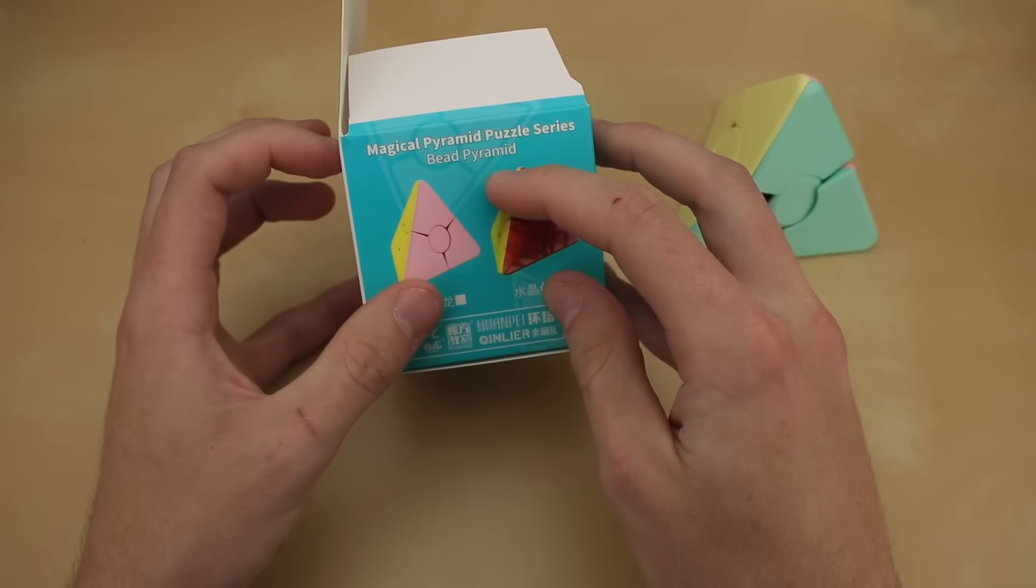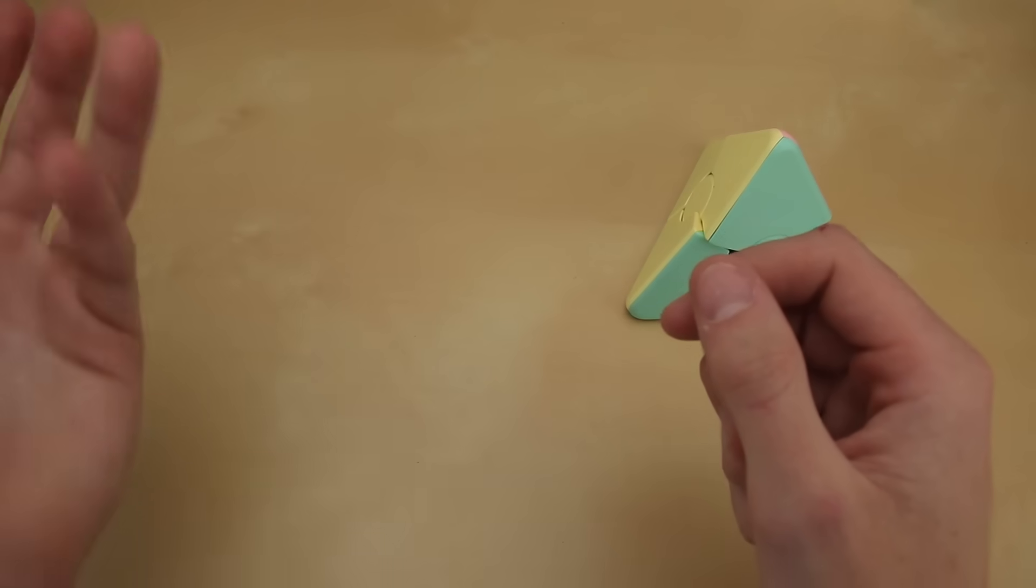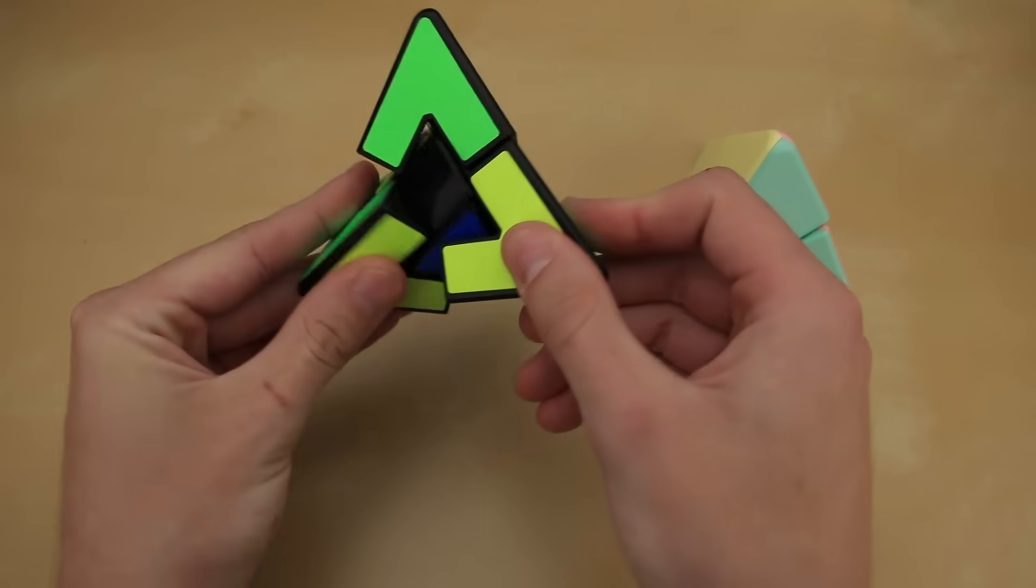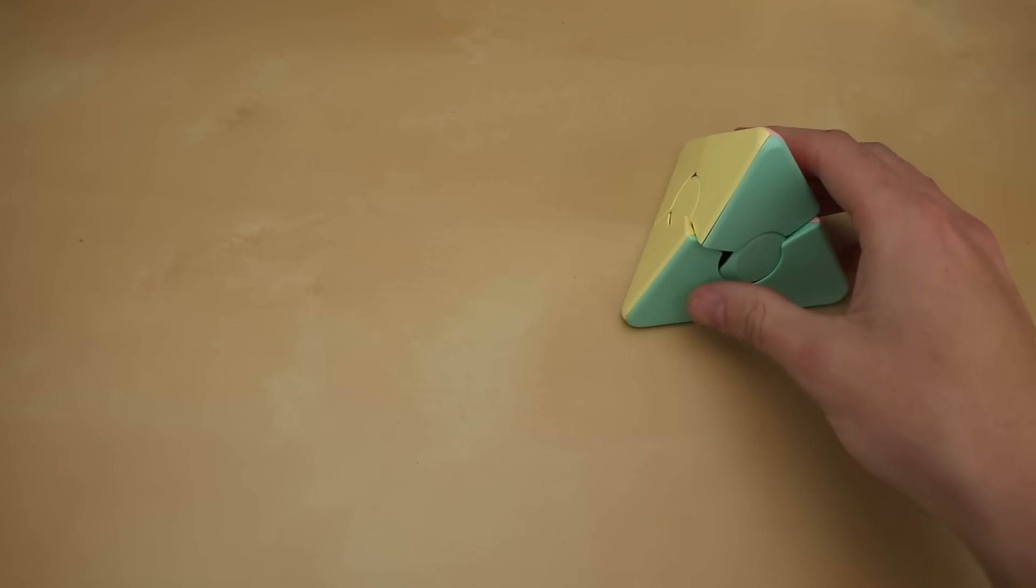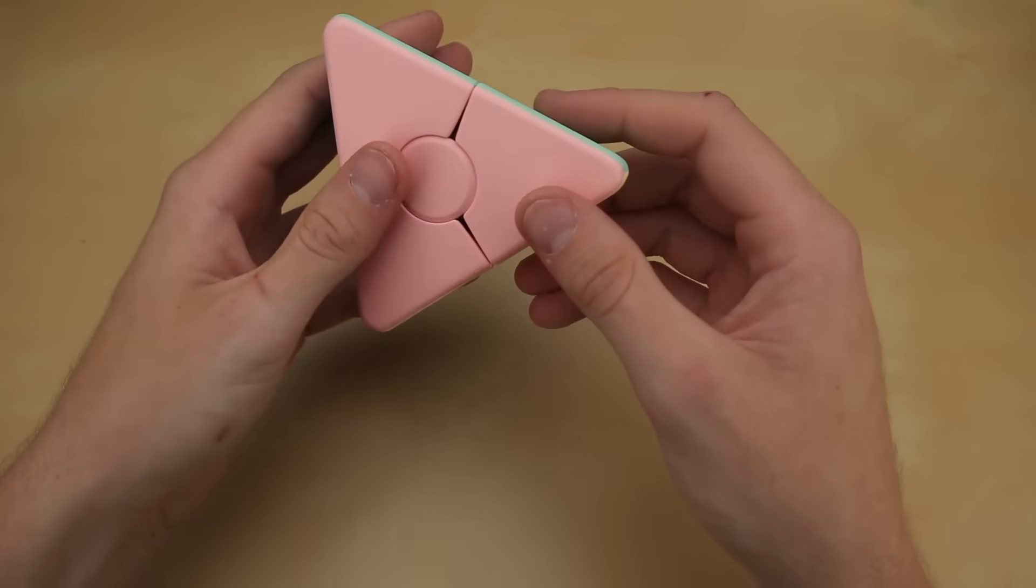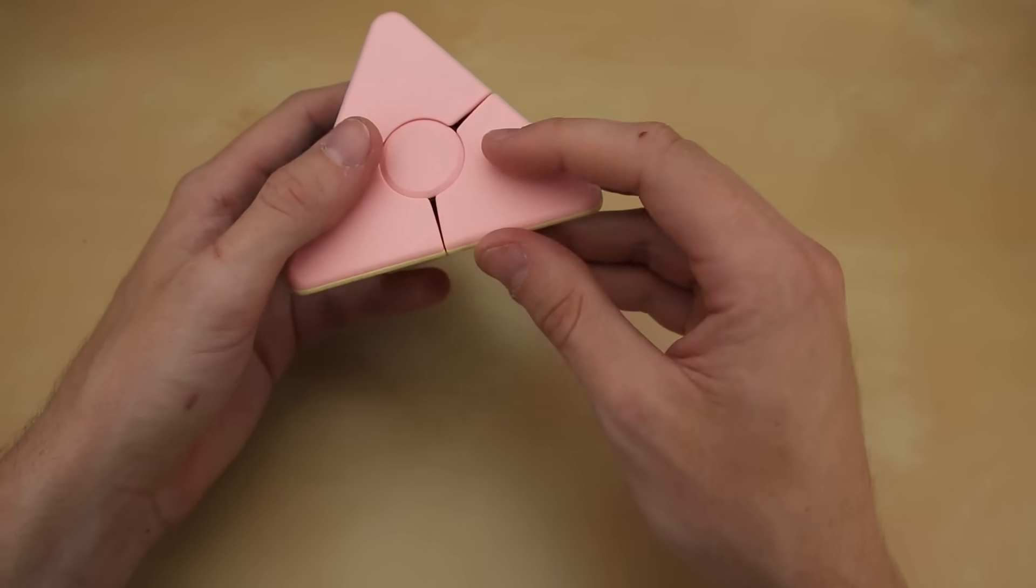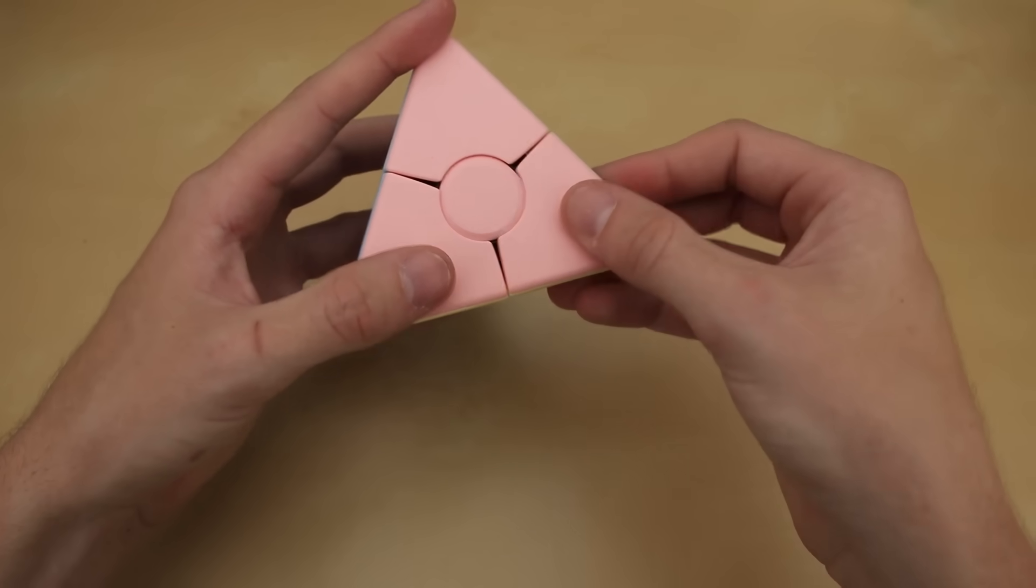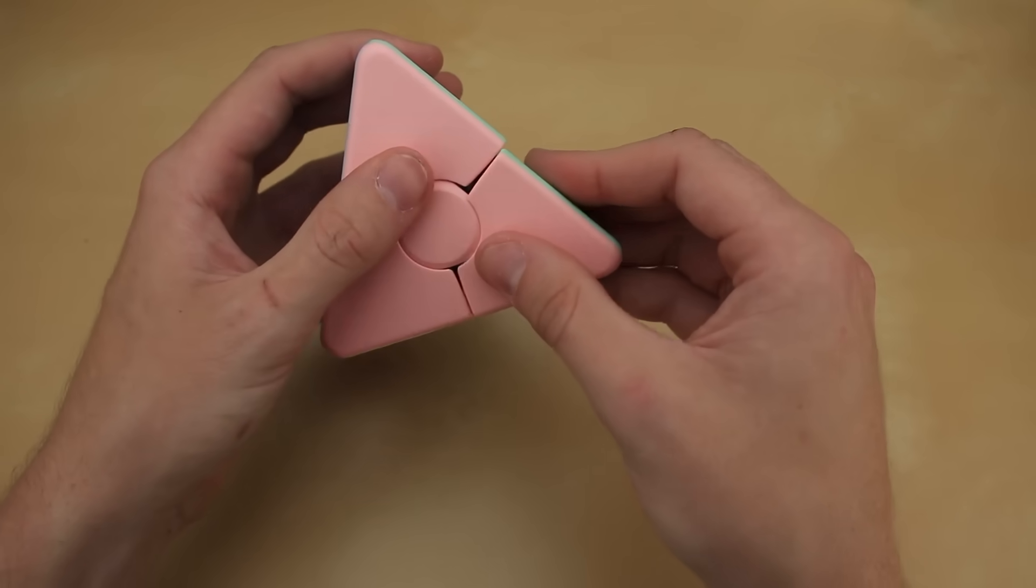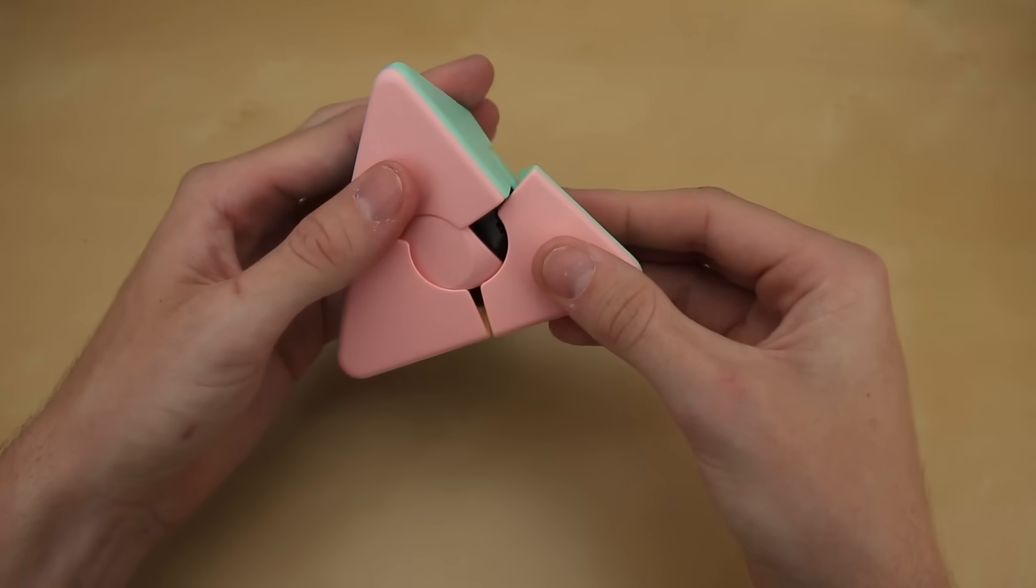This is the MoYu Bead Pyramid. It does also come with an instruction booklet, although I'm going to try and solve all of these without using them, and what I believe this is is basically the Meffert's Pyraminx Duo, but in a slightly different shape and hopefully with slightly better turning. And yeah, it seems like that's exactly what this is. The turning does feel a little bit better than the Meffert's Pyraminx Duo, although it is a lot less clicky, also a lot less clicky than the last MoYu puzzle we checked out.